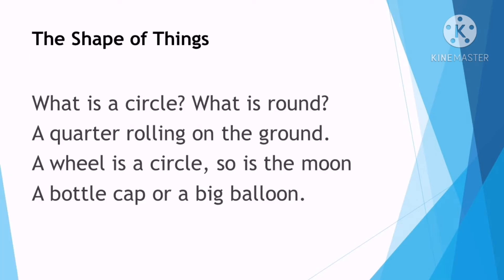And to start with, let me read to you a poem entitled The Shape of Things. What is a circle? What is round? A quarter rolling on the ground. A wheel is a circle, so is the moon, a bottle cap, or a big balloon.